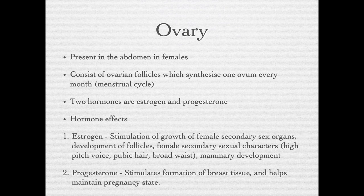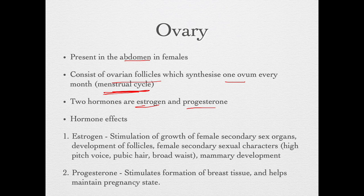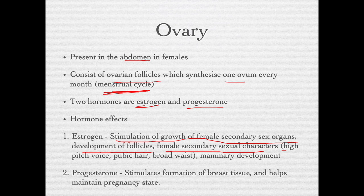The ovaries are the female reproductive gland, present in the abdomen. They are made of ovarian follicles which synthesize one ovum every month in the menstrual cycle. Two hormones are produced: estrogen and progesterone. Estrogen stimulates the growth of female secondary sex organs and secondary sexual characters like a high-pitched voice, pubic hair, and a broad waist, and development of follicles. Progesterone stimulates the formation of breast tissue and helps maintain pregnancy.